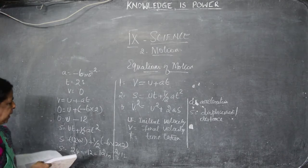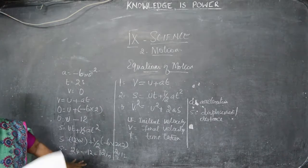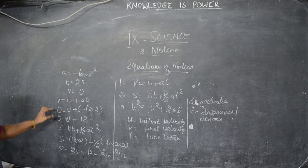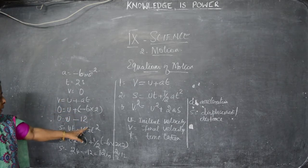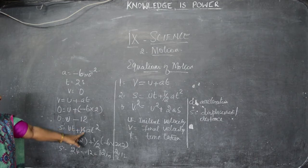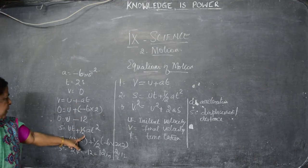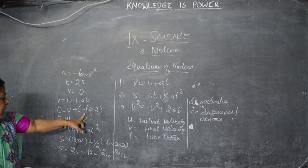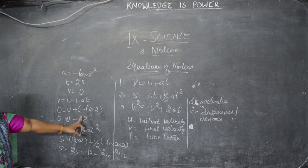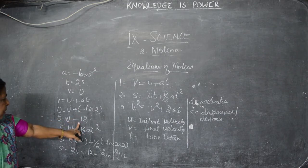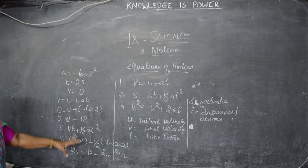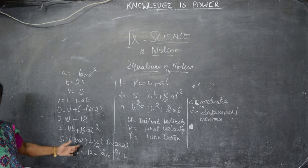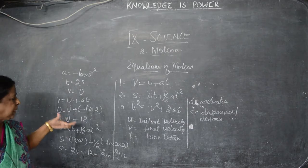So after the brake is applied, the car stops after 12 meters. We took the values from the question, substituted them into the equation v = u + at to find u, then substituted u and a into s = ut + half at squared and got the answer. The car travels 12 meters after the brake is applied.